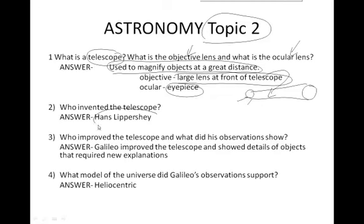Who invented the telescope? Hans Lippershey. And then, who improved the telescope and what did his observations show? Well, it was Galileo who improved the telescope, and this showed details of objects that required new explanations.